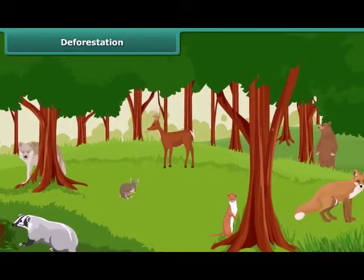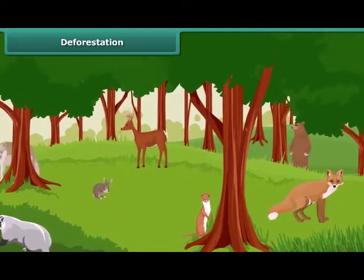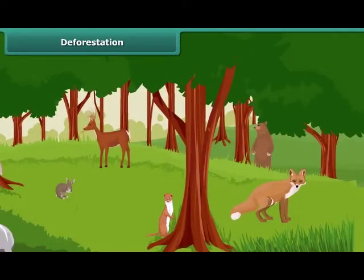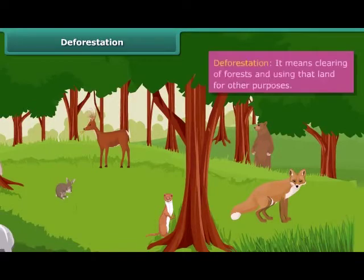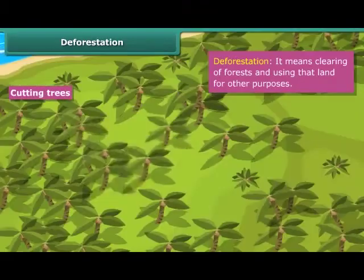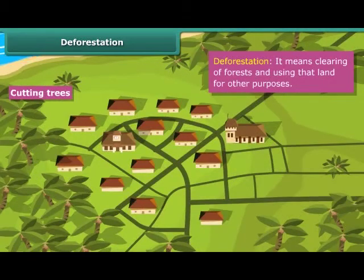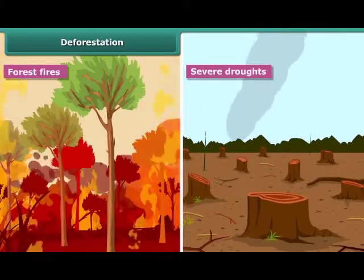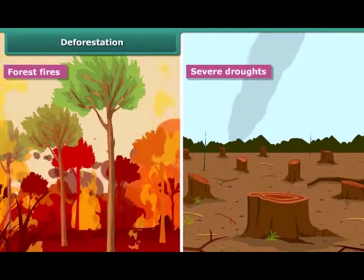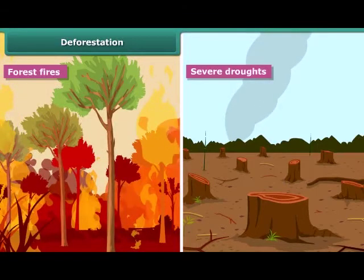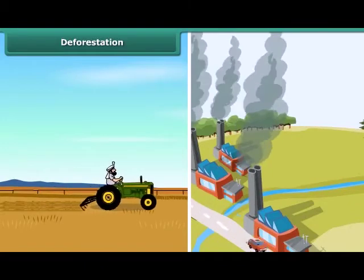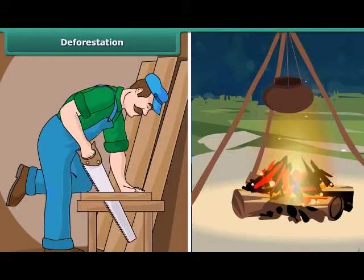Friends, a great variety of plants and animals exists on Earth. They are essential for the well-being and survival of mankind. But a major threat to the survival of these organisms is deforestation. Deforestation is the clearing of forests and using that land for other purposes. Some natural causes of deforestation are forest fires and severe droughts. Man-made causes include cutting of forest trees for procuring land for cultivation, building houses and factories, making furniture, or using wood as fuel.